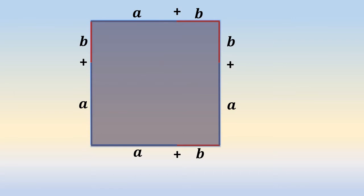Area of a square is equal to side into side. Here the side is equal to a plus b. Hence, the area of this square is equal to a plus b into a plus b, that is equal to a plus b whole square.